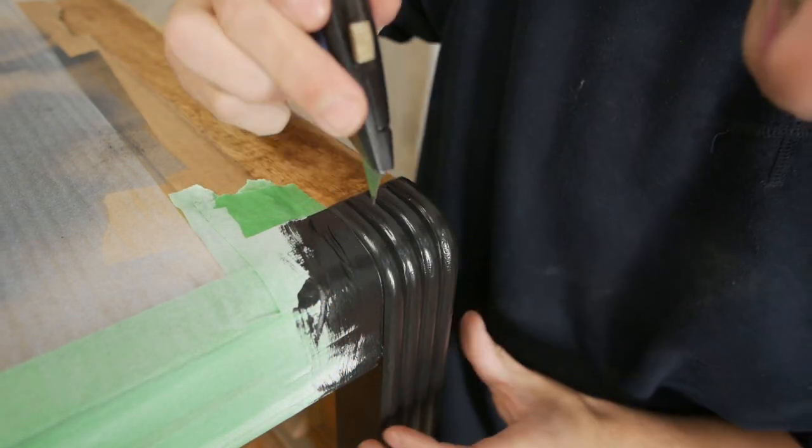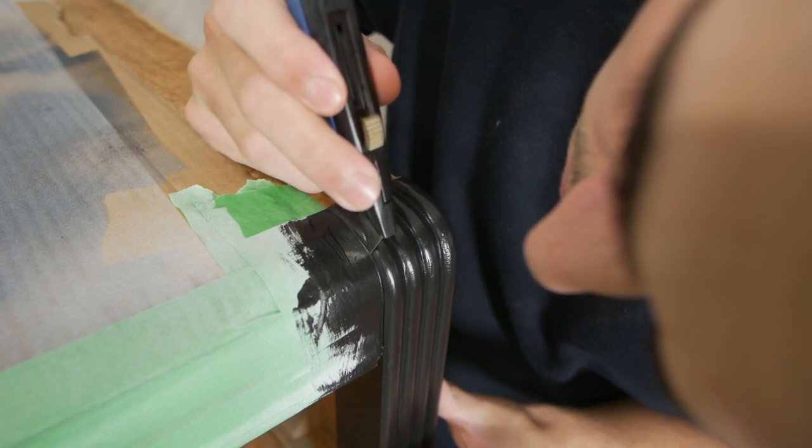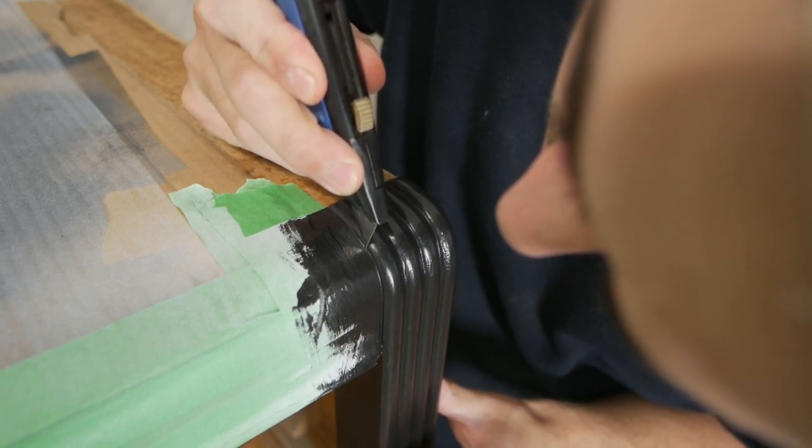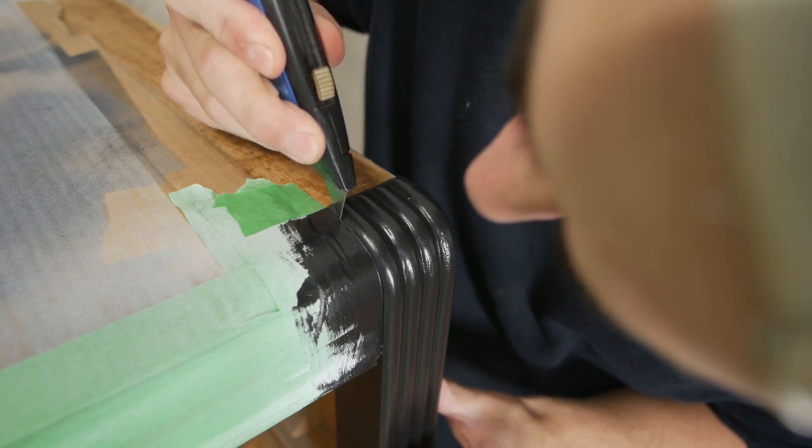Here the paint was connected pretty good with the tape, so I grabbed a utility knife and cut it down just so it was easier to peel off.